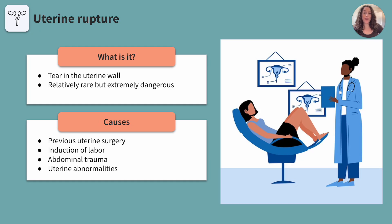Uterine rupture is a serious medical condition where the uterine wall has a tear or a hole in it. It is a relatively rare but extremely dangerous condition. The uterus is an organ that a fetus develops within during pregnancy. The uterus typically has a very strong muscular structure, but under certain circumstances, it can tear and rupture, leading to life-threatening circumstances for both the pregnant client and the baby.